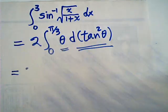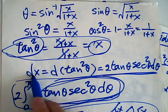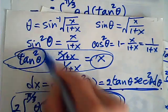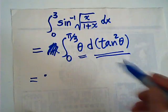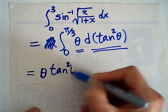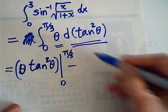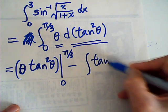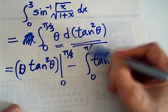Integration by parts says integral of u dv equals u·v minus integral of v du, from 0 to pi over 3. Here u is theta, v is tan² theta, and du is d theta. So this becomes: theta times tan² theta from 0 to pi over 3, minus the integral from 0 to pi over 3 of tan² theta d theta.